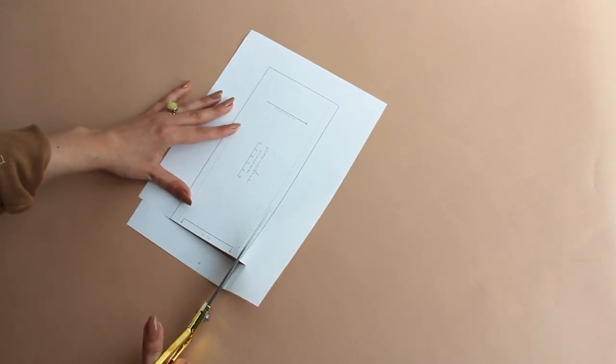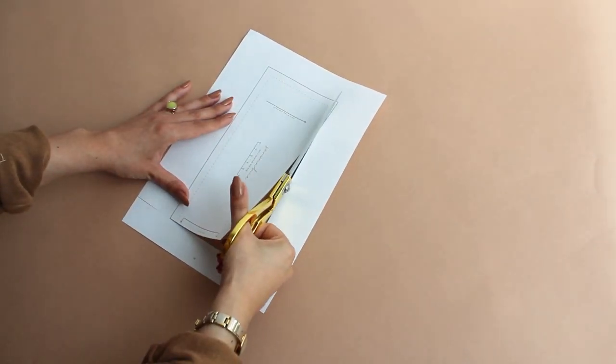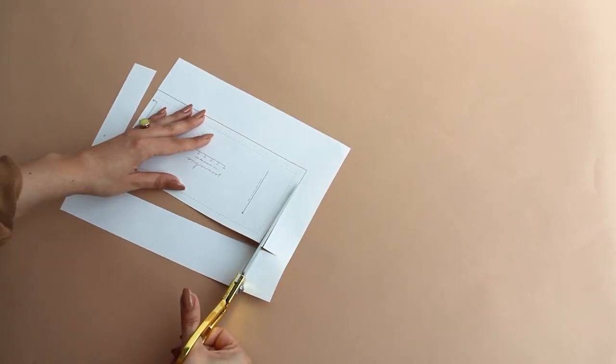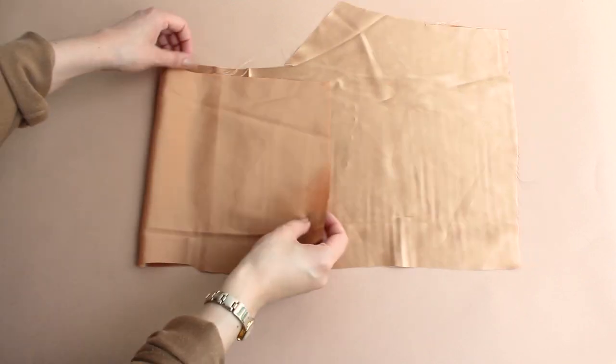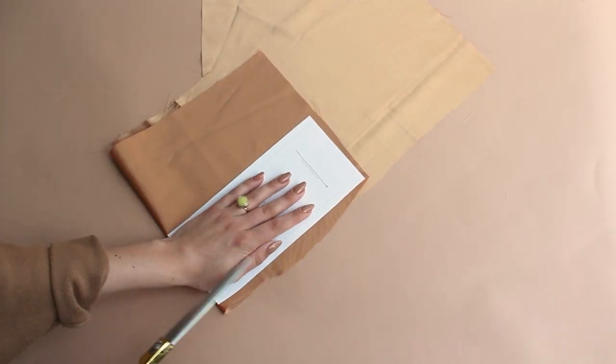To start, cut out the pattern piece then take a desired fabric and fold it in half. Place the pattern on top and cut it out.